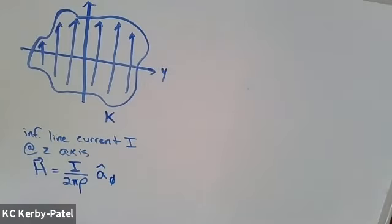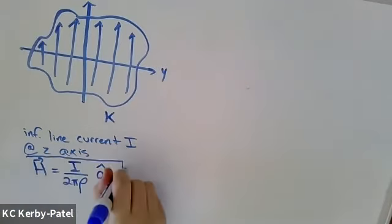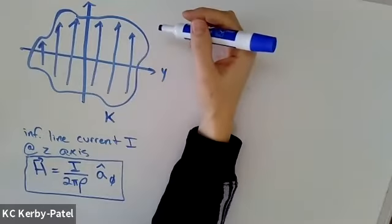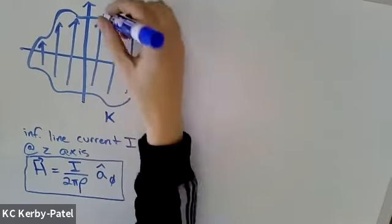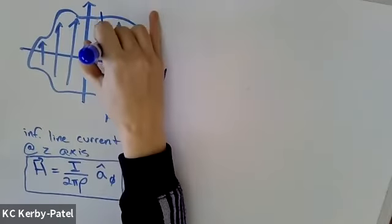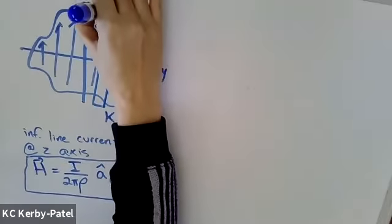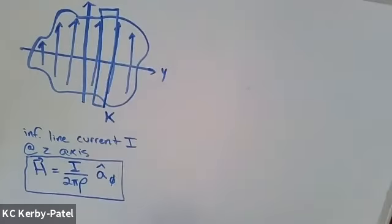So then how can we use this information to simplify this problem? The first two steps that we're going to do are related to that. What we need to do then is divide this surface up into stripes, and each stripe we're going to treat like an infinite line current, because it is.